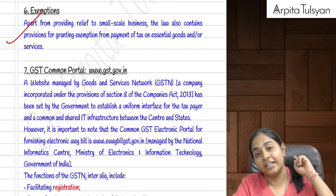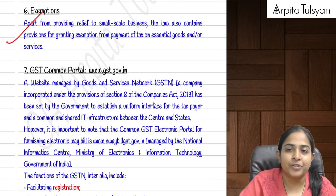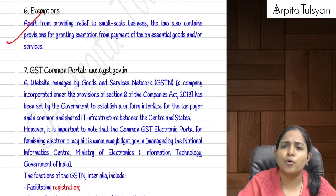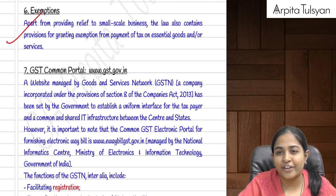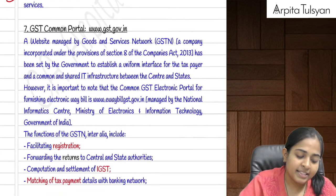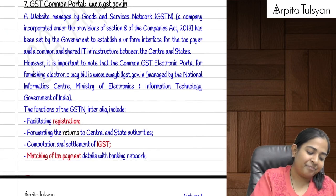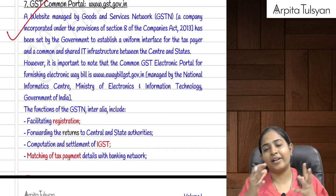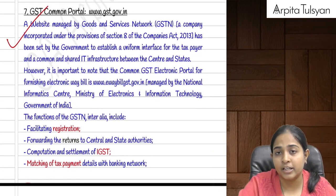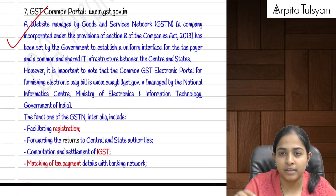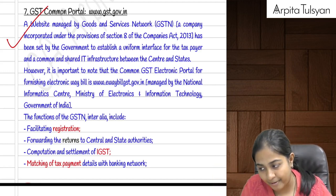Apart from the relief given to small taxpayers under the composition scheme, some exemptions have also been introduced. Certain products like fresh milk, fresh fruits, fresh vegetables, etc. are totally exempted from GST. There is a separate chapter called exemptions from GST for studying these.